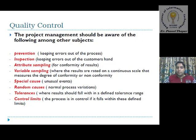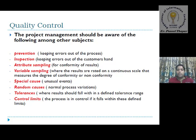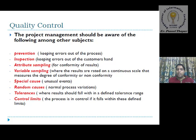Next is attribute sampling, which is the conformity of the result. We check samples and on the basis of those samples we control quality. Variable sampling is where results are rated on a continuous scale and measure the degree of conformity or non-conformity. If a product is not conformable, we vary it and check again for conformity.